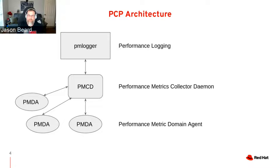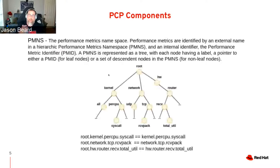PMCD is your Performance Metrics Collector Daemon that runs and communicates to the agents that are out there. PMlogger, which does archive logging, will connect into PMCD and gather those particular metrics, record them, and log them to a file. We have a Performance Metrics Namespace — it's a tree hierarchical format of the metrics being recorded on the system. It starts at the root level and goes down from there. They omit the root to make it easier to type and see, but it still exists.